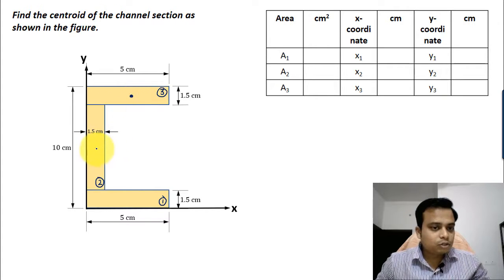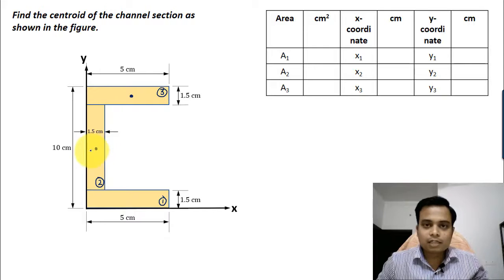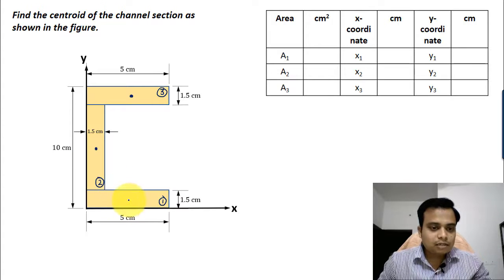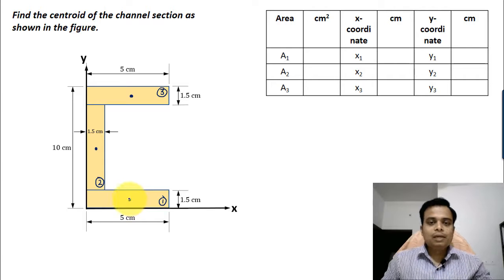So essentially there are three centroids: one over here in the form of C3, one more centroid over here in the form of C2, and one more centroid, C1. Now individually all three rectangles will be having their areas and we have to calculate their areas initially.